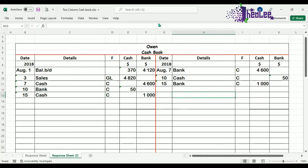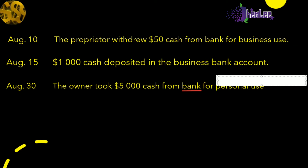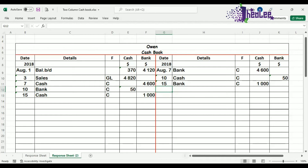Let's look at the other transaction, that is August 30th: the owner took $5,000 cash from bank for personal use. Even though the owner took the cash from the bank, it cannot be cash and bank — it has to be bank. Because this is taken for personal use from the business bank account, the other item affected is drawings. So the two items are bank and drawings. Can we say that this is a contra-entry? No, because we do not have cash and bank affected by that very same transaction. In this case, we only have bank that is affected.